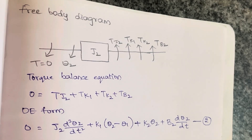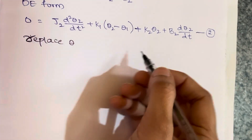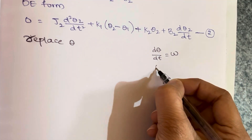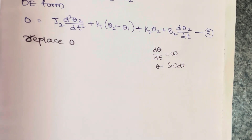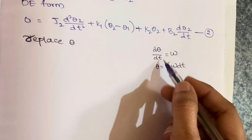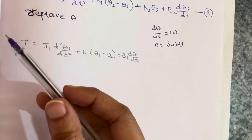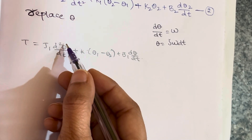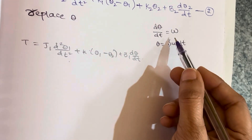Now we need to draw the torque-voltage and torque-current electrical analysis circuits and verify using mesh and nodal analysis. For that, I am taking dθ/dt as ω (omega), so θ will be the integration of ω dt. Now just replace these terms: wherever dθ/dt appears, substitute ω; wherever θ appears, substitute the integration of ω dt.